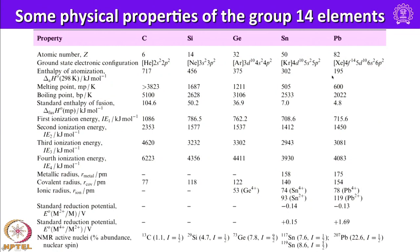Looking at the physical properties of group 14 elements: the enthalpy of atomization decreases down the group, indicating the more volatile nature of the heavier elements. Melting point, boiling point, and standard enthalpy also steadily decrease. First, second, third, and fourth ionization energies all decrease down the group due to the increase in atomic size.